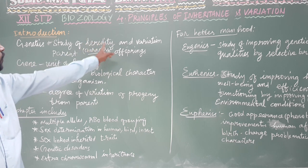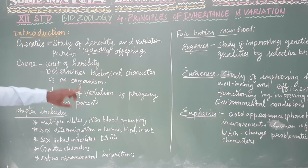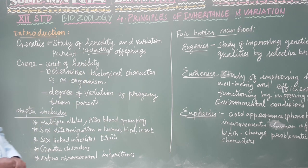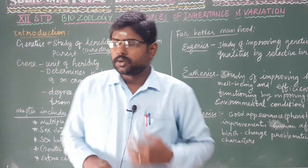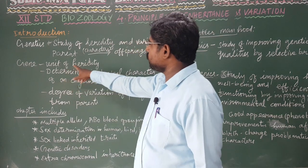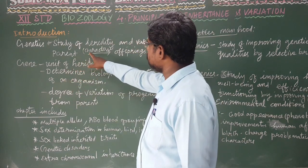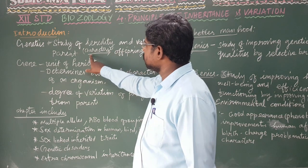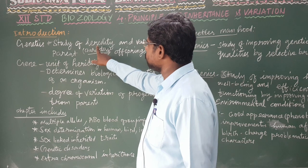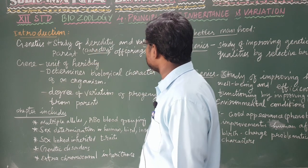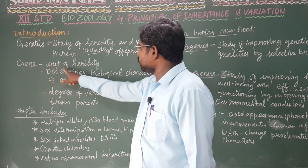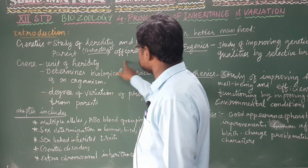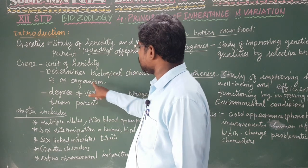So what is the unit of heredity? It means gene. Gene is the unit of heredity. Gene is the unit of heredity and represents the biological character of an organism.